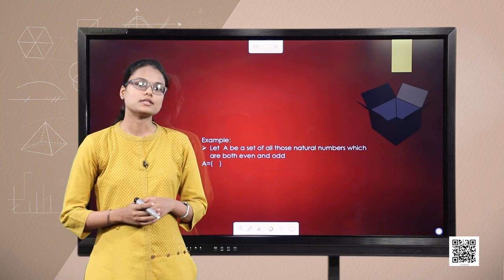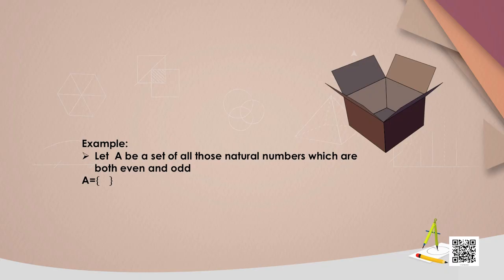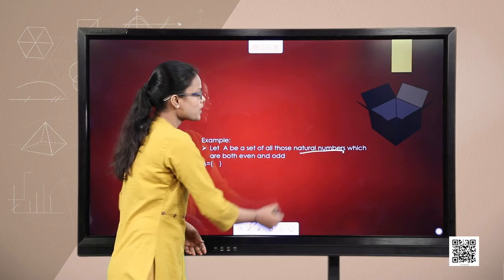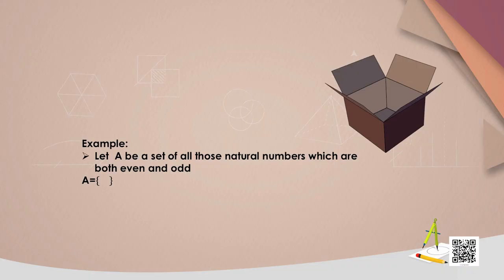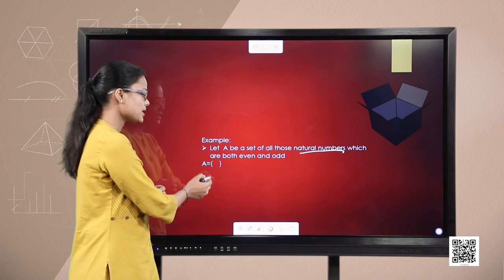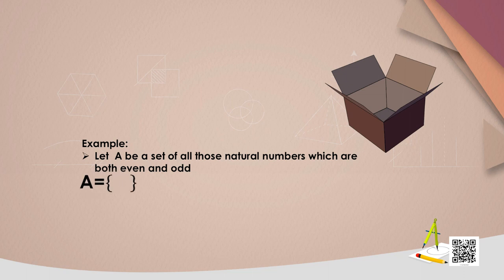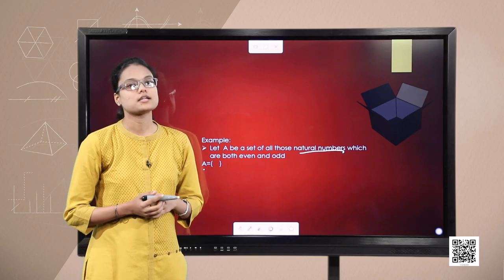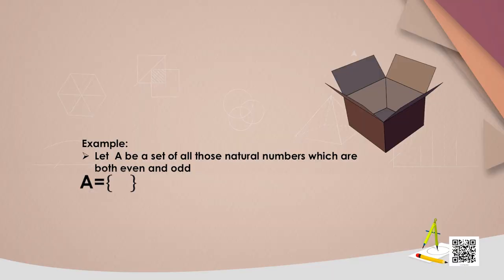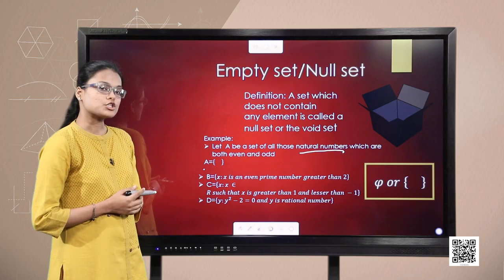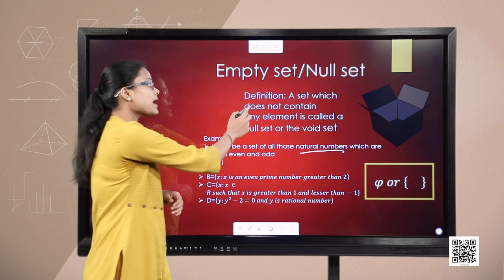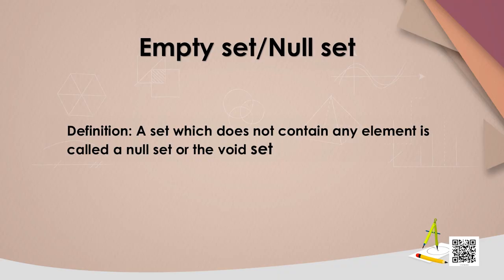Let us observe this example. We have to find a set of all those natural numbers which are both even and odd. Can we have a number which is both even and odd? No. You may see that the set A is empty. This is the first type of a set — empty set. According to the definition, a set which does not contain any element is called a null set, void set, or an empty set.